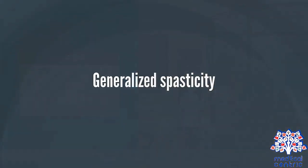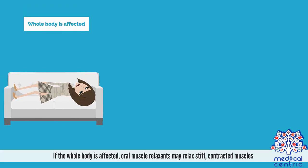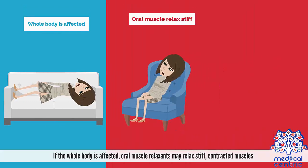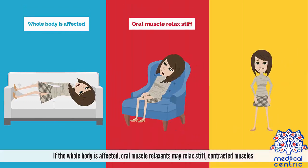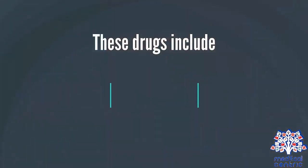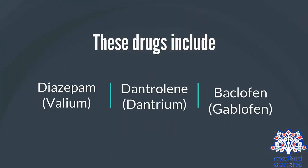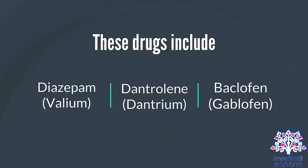Generalized spasticity. If the whole body is affected, oral muscle relaxants may relax stiff, contracted muscles. These drugs include diazepam — Valium — dantrolene — Dantrium — and baclofen — Gablofen.